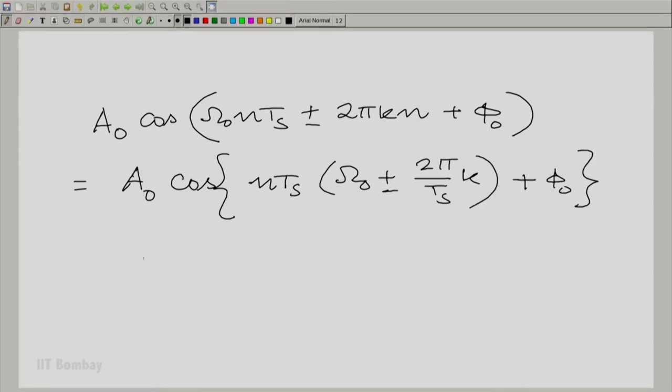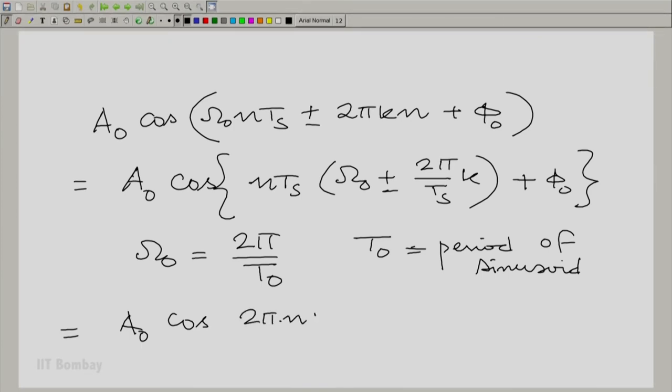Now, of course, you recognize that omega_0 is 2π/T_0, T_0 is the period. So we can rewrite this. We can rewrite this as A_0 cos. Now, we will take 2π also common. A_0 cos 2π nT_s in brackets (1/T_0 ± k/T_s), where k has all the positive integer values plus phi_0.